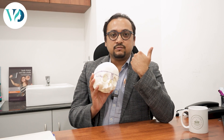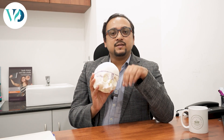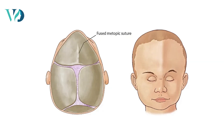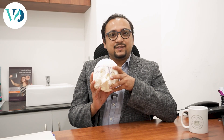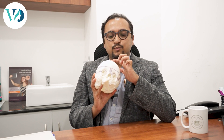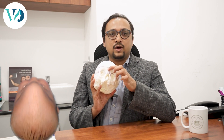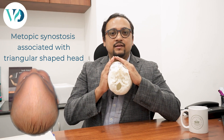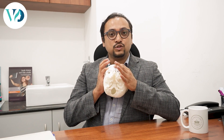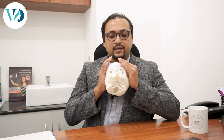If this fusion happens before that age — either when the baby is in the mother's womb or very early — some sort of prominence happens in the suture area. In metopic synostosis, this prominence is also associated with a triangular shaped head. The suture has fused and prevented the bones from developing further, which is why a very triangular shaped head forms.